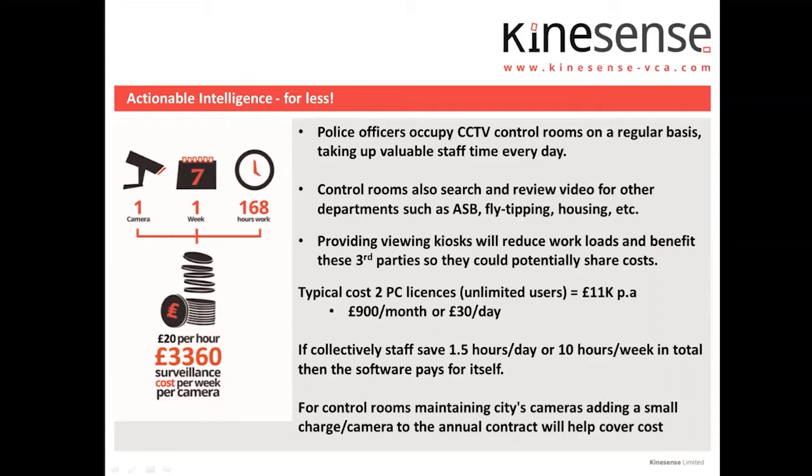A typical licence is available on machine licences or named users, at £11,000 a year — which breaks down to £30 a day. Based on a £20 per hour cost, you need to save collectively just one and a half hours a day, or 10 hours a week, for the software to pay for itself. On a job with 100 hours, you can probably save 90+ hours — the return on investment is very quick. For control rooms maintaining city cameras, adding a small charge per camera on the annual contract can easily cover the cost, especially with boroughs that have over 1,000 cameras.